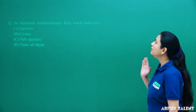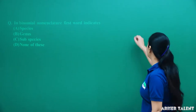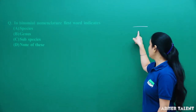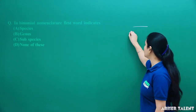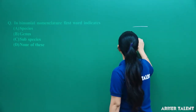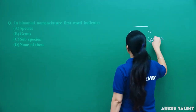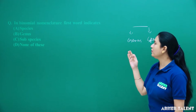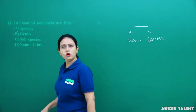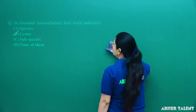First of all, in binomial nomenclature, when we study it, we learn that an organism's name is made up of two words. The first word is the genus and the other word is the species. So in binomial nomenclature, the first word indicates the genus of the organism. Answer option B is the correct answer.